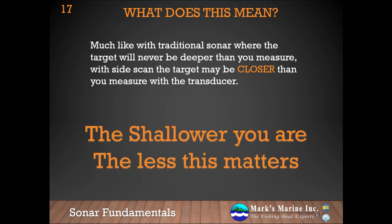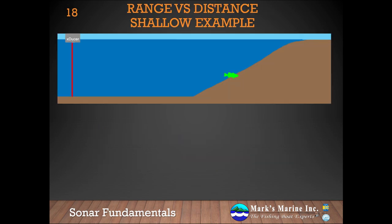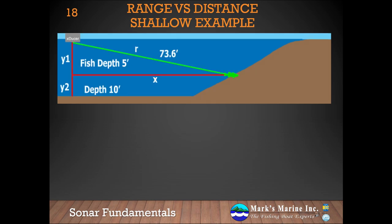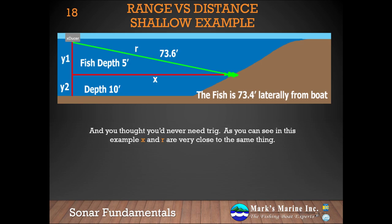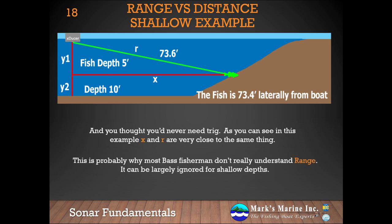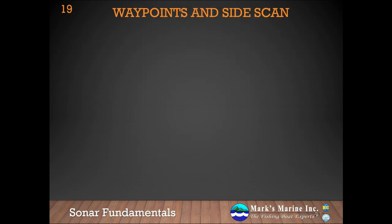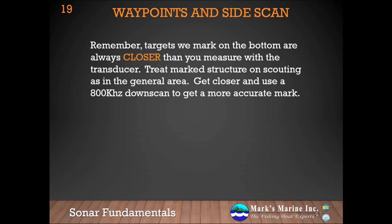Let's look at the previous example, but this time we're in 10 feet of water with our fish at 5 feet, maintaining the range to target at 73.6 feet. How far away laterally is the fish from the boat? The answer is 73.4 feet — in this shallow water example, x and r are very close to the same thing. This is probably why many bass fishermen don't fully understand range in sidescan, and it can largely be ignored for shallow depths. But as you get into 50 or 60 feet of water or walleye depths, it starts to come into play significantly. Remember: targets we mark on the bottom are always closer than you measure with the transducer. Treat marked structure on scouting runs with the sidescan beam as in the general area — get closer and use a high frequency like 800 kilohertz to get a more accurate mark. The bigger the range and depth, the less accurate the marks.